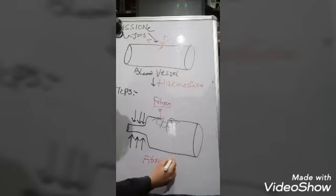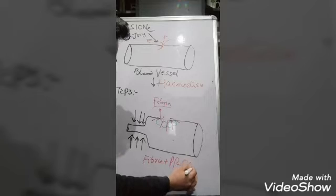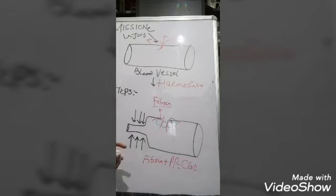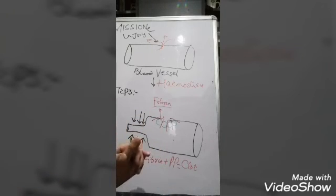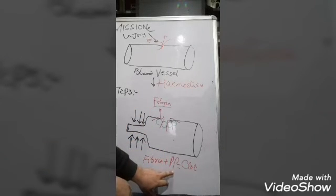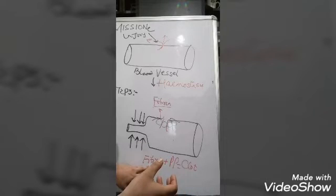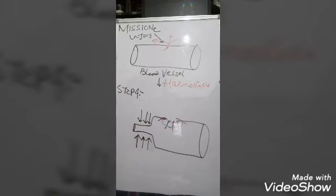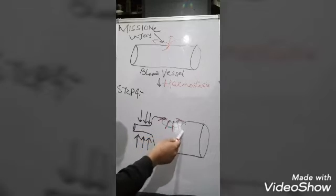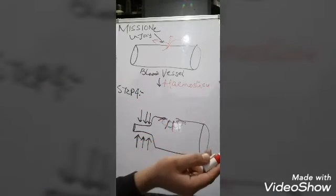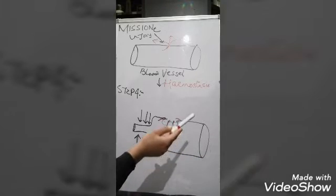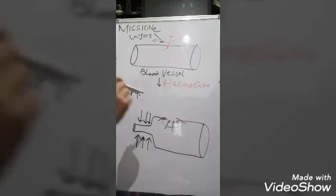Fibrin plus the platelet plug together is what we consider as a clot. So step three in hemostasis is clot formation. A clot is the platelet plug strengthened by fibrin. Once a clot forms, bleeding is stopped.